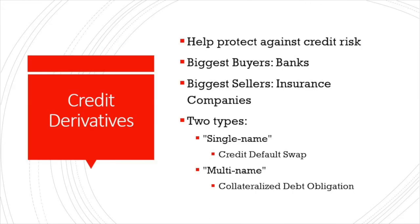Let's start by talking about what credit derivatives are. Credit derivatives help protect against credit risk. The biggest buyers of credit derivatives are banks, and the biggest sellers are insurance companies. There are two types: single-name, for example credit default swaps, and multi-name, for example collateralized debt obligations. Now, instead of waiting around and hoping for the best once assuming a credit risk, buyers and sellers are able to insure themselves against this risk through credit derivatives.